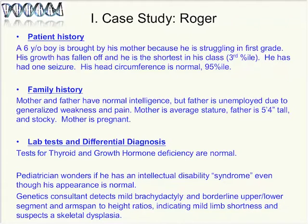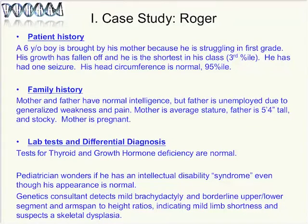His father is unemployed due to generalized weakness and pain. His mother is of average stature, but his father is five foot four inches tall and stocky, and his mother is pregnant. He's had some initial workup ruling out other short stature causes like thyroid and growth hormone deficiency. The pediatrician wonders if he has an intellectual disability syndrome because of his difficulty in school, even though his appearance is basically pretty normal. A genetics consultant is engaged and detects mild brachydactyly, which is short fingers, and borderline upper-lower segment and arm span to height ratio, indicating mild limb shortness, suggesting a possible skeletal dysplasia.